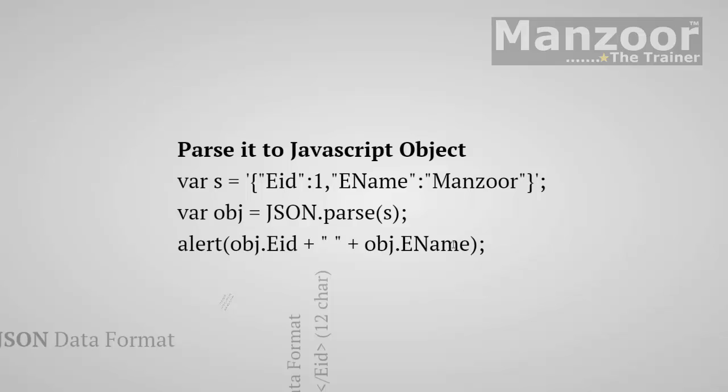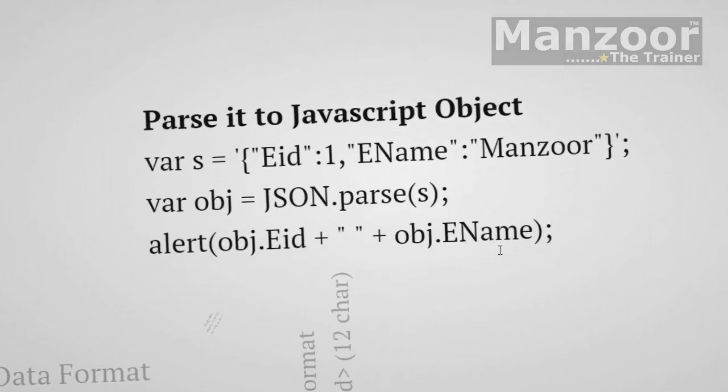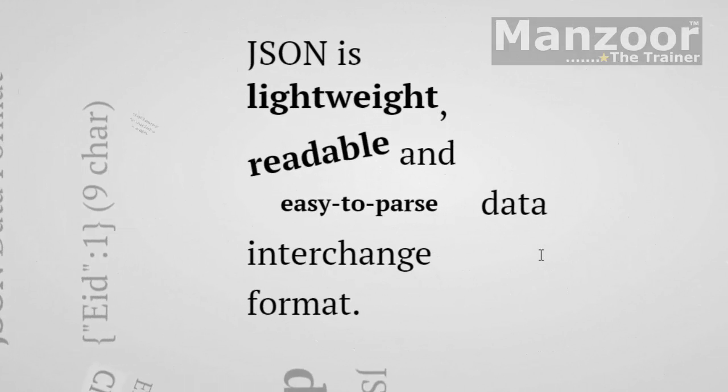So these are the three major advantages of JSON over XML: JSON is lightweight, readable, and easy to parse — making it a great data interchange format. Remember, we use JSON to interchange data.